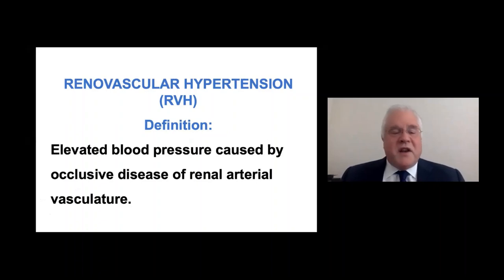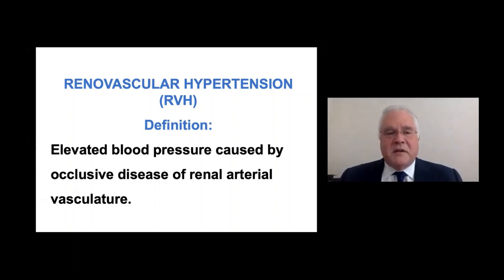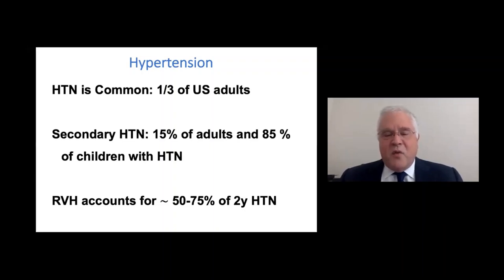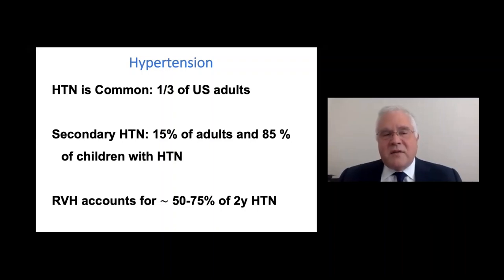Let's start with a definition. Renovascular hypertension is something that, as urologists, we really need to know about, and it's a very good review of both physiology and anatomy. The definition is that elevated blood pressure is caused by occlusive disease of the renal arterial vasculature. Hypertension is very common — it affects about a third of all U.S. adults — but that includes essential hypertension. Renal vascular hypertension is a form of secondary hypertension, caused by some anatomic entity, such as coarctation of the aorta, Cushing's disease, or pheochromocytoma.